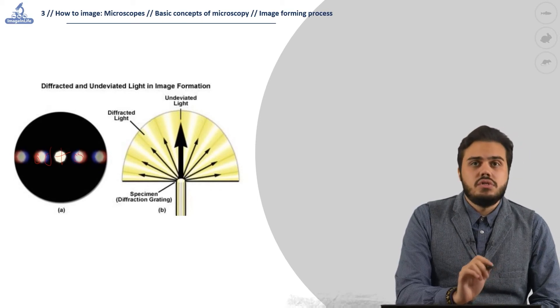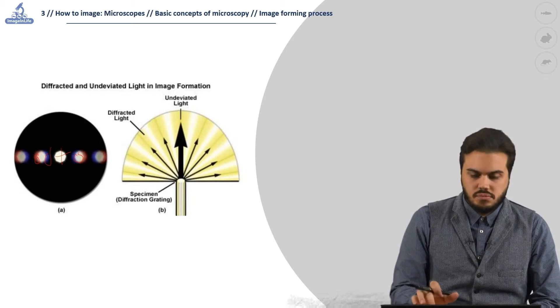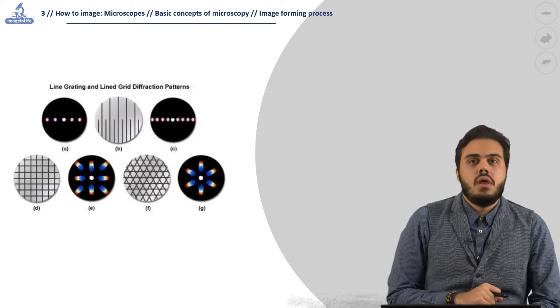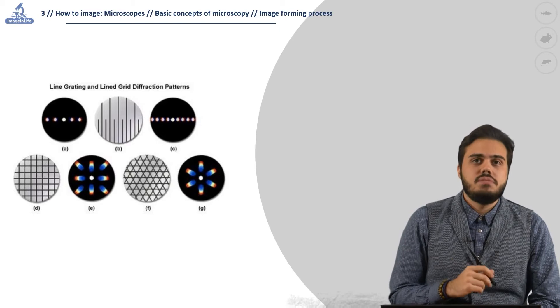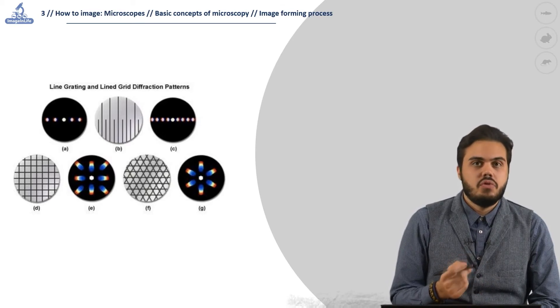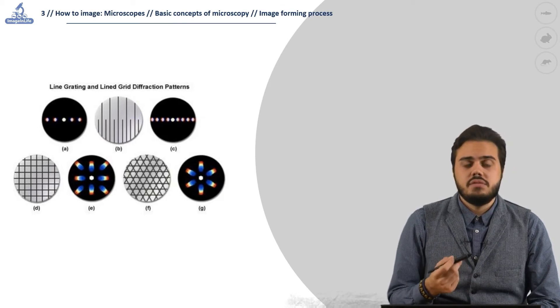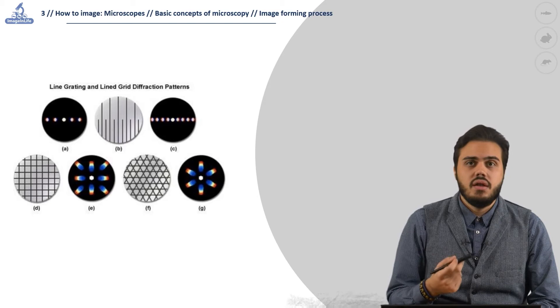The further the spots will be from the center, the dimmer they will be. It is possible to observe this pattern in a microscope using a grading element in the specimen position. This happens because, at the end, the specimen is just a grading with a high level of complexity.